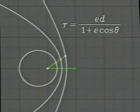This is the basic formula for describing all the conic sections: the ellipse, the parabola, and the hyperbola.